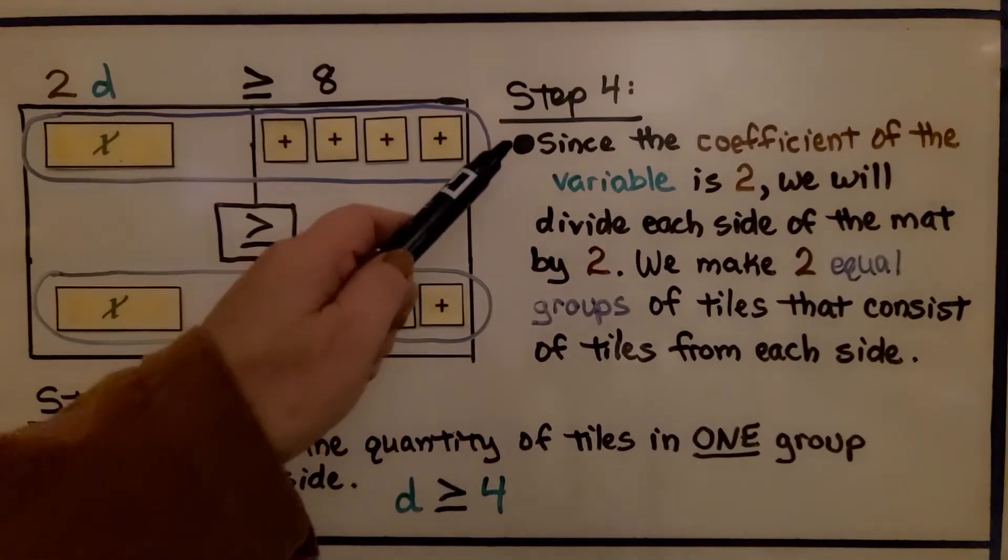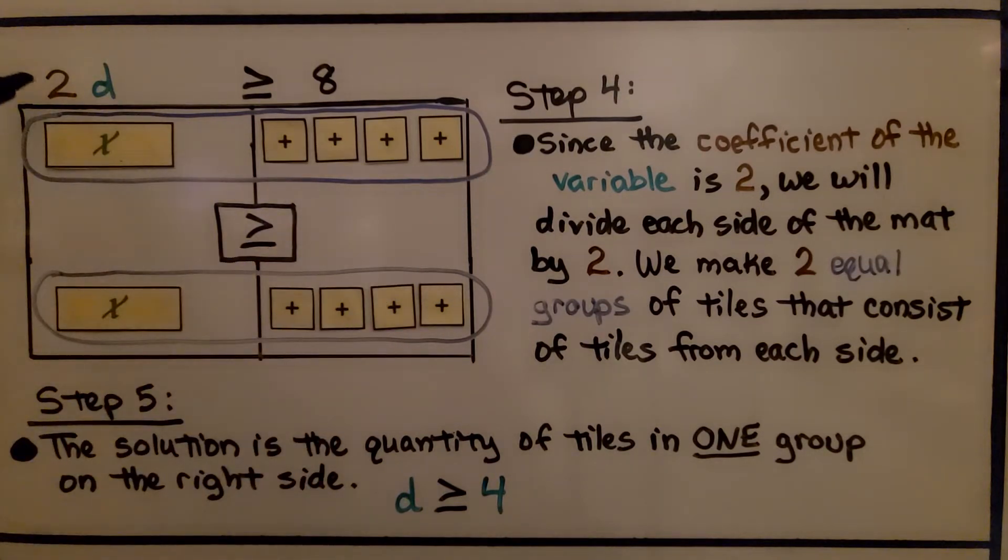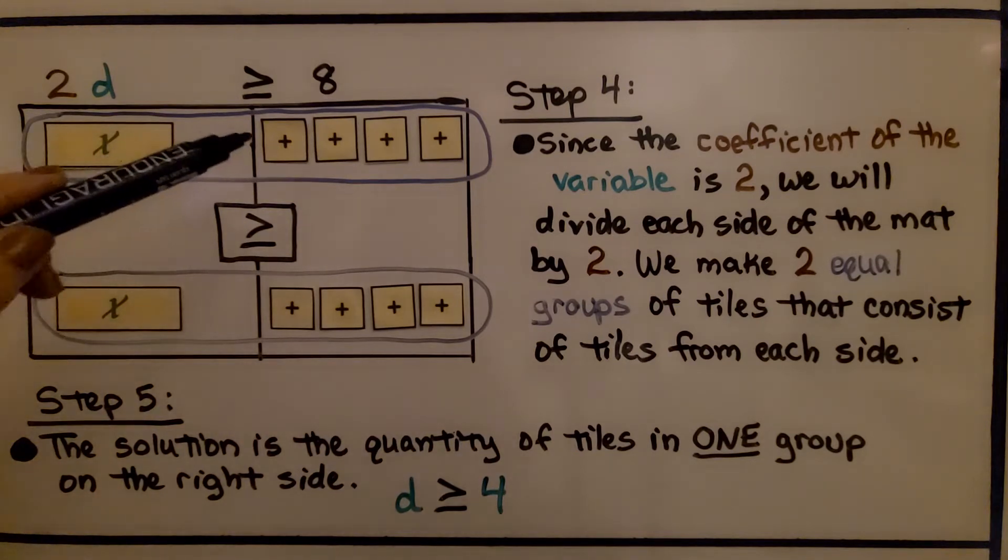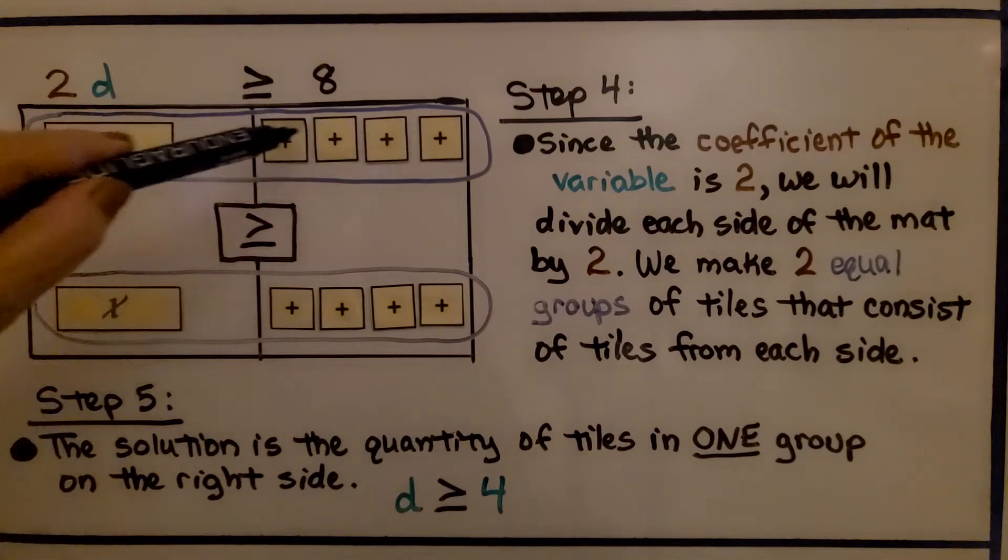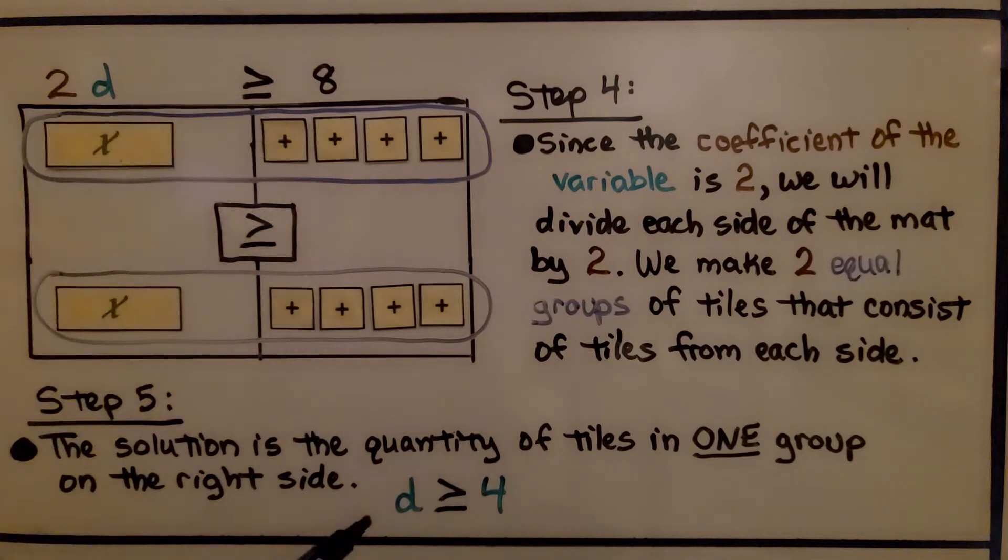For step four, since the coefficient of the variable is a positive two, we divide each side of the mat by two. We make two equal groups of tiles that consist of tiles from each side. Step five is the solution of the quantity of tiles in one group on the right side. Right here, we have four positive ones. We know that d is greater than or equal to four.